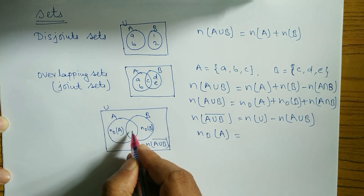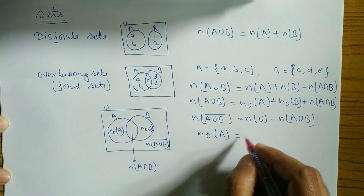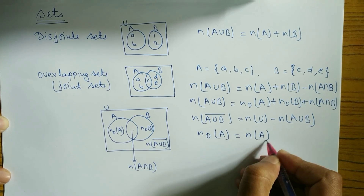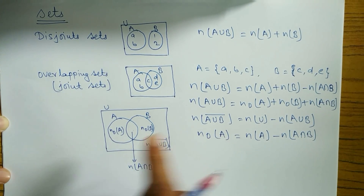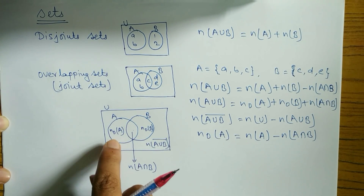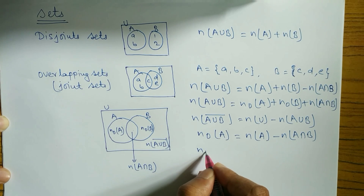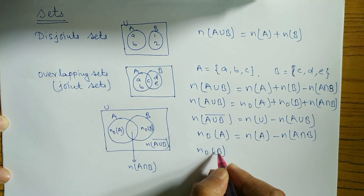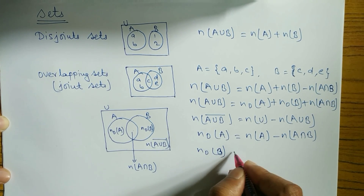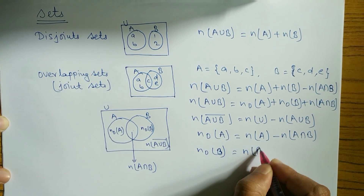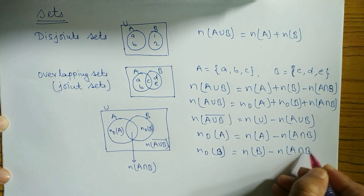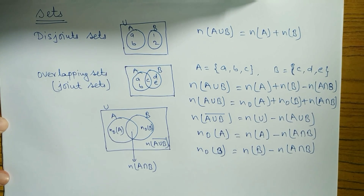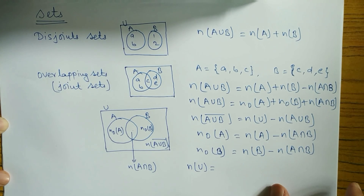To find n(only A): subtract the intersection from the total of A, so n(only A) = n(A) − n(A∩B). We subtract the common elements to find only A. Similarly, n(only B) = n(B) − n(A∩B).